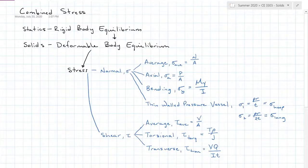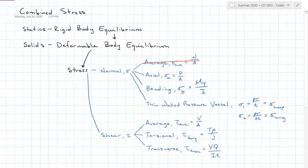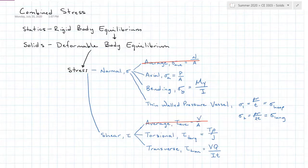Now that we've discussed all the possible stress options, we can talk about combined stress, because there's never just one stress happening at a time. The very first thing I'm going to do is mark out the averages, because average stresses are not exact distributions of forces over an area — they're generalized. For combined stress we need the exact distribution, so averages are going to go. We're going to stick with axial, bending, thin wall pressure vessel, torsional, and transverse.